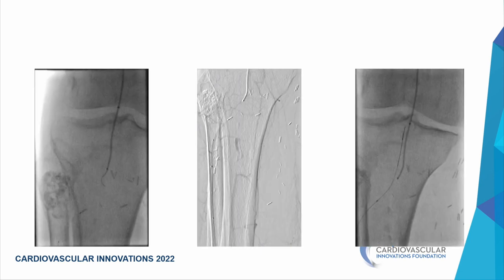The proximal cap did not look bad for the CTO but there were extensive collaterals. The target was suboptimal — a small AT vessel. We still decided to try antegrade crossing. Using a stiff angle glide wire we went through the popliteal easily, then exchanged to a Command wire and tried 0.018 and 0.014 with support catheter, but could not cross. Our strategy is to give it 5-10 minutes, maximum 15, then switch to retrograde.